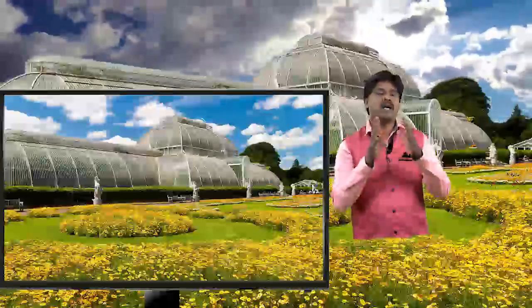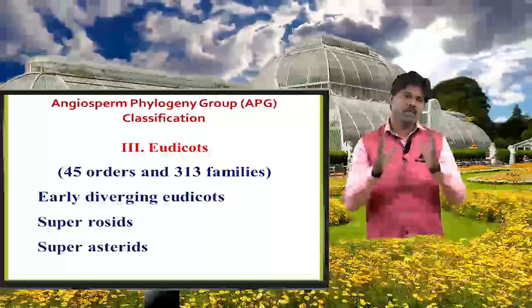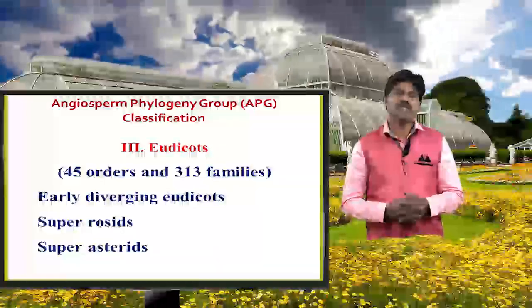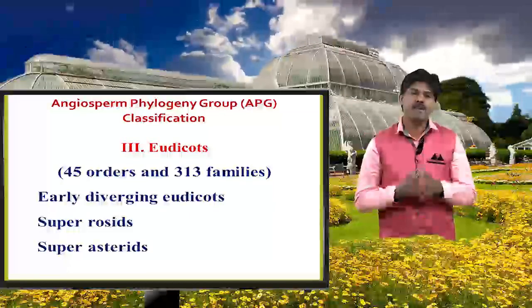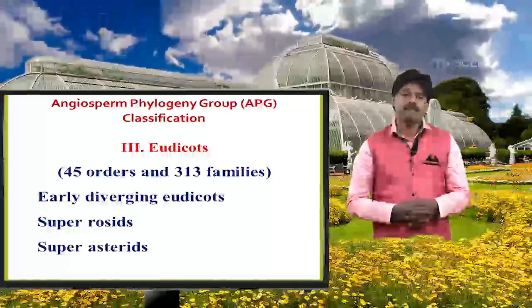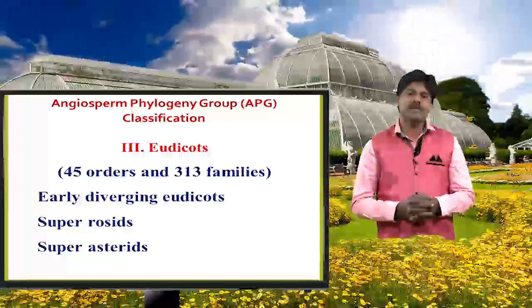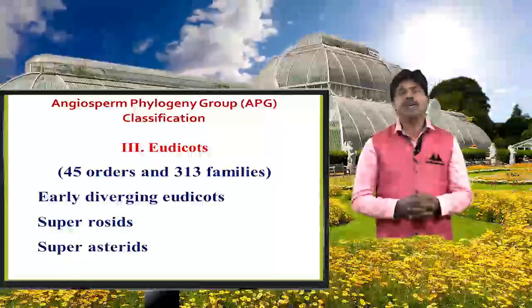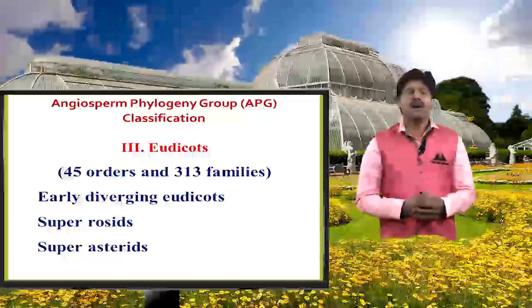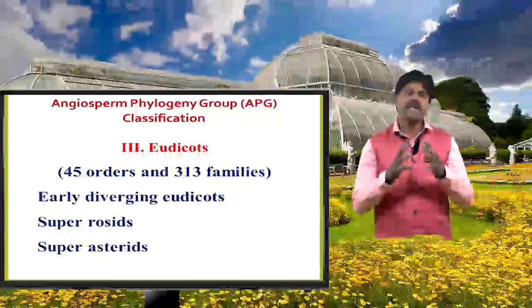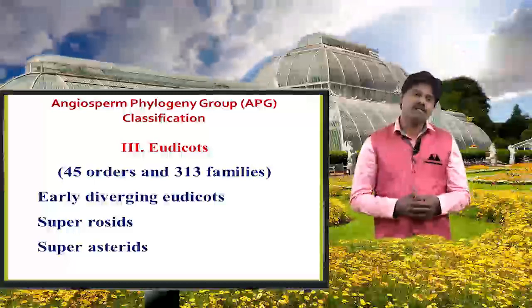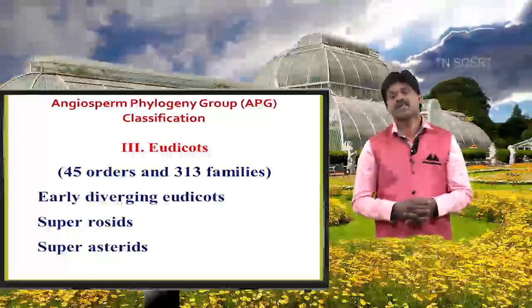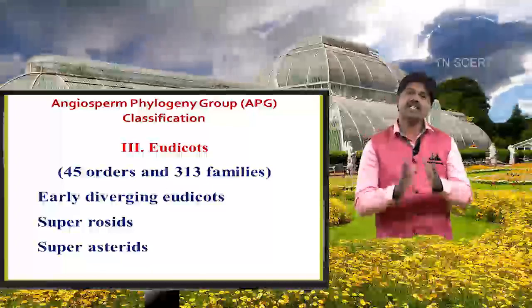The third clade is eudicots. 'Eu' stands for true — it is a real dicot. Real dicots have two cotyledons. Another important point: eudicots consist of tricolpate pollen grains. The tricolpate pollen grain is an important point to differentiate eudicots. Eudicots are divided into 45 orders and 313 families.